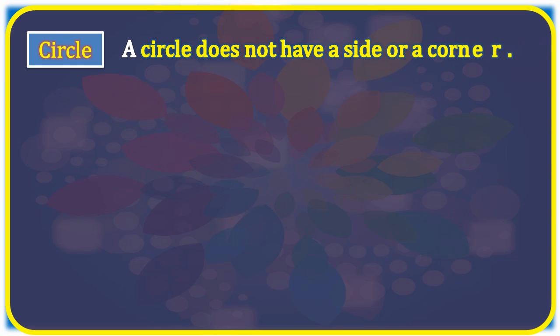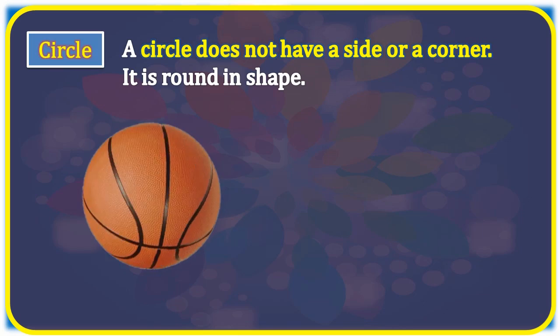Circle. A circle does not have a side or corner. It is round in shape. For example, this ball is round in shape.